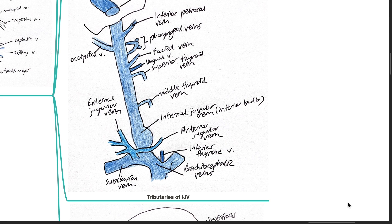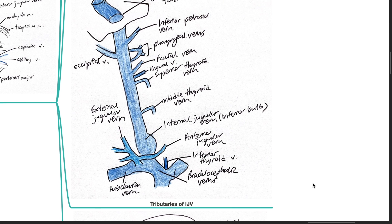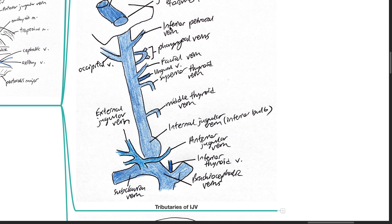Tributaries of the IJV include the inferior petrosal vein, pharyngeal veins, occipital vein, facial vein, lingual vein, superior thyroid and medial thyroid veins.